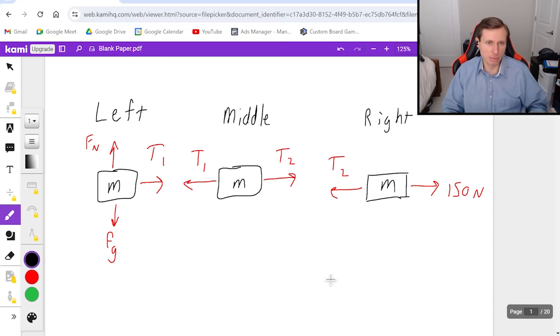What's step two? The sum of forces equations, Newton's second law. Now we got a bunch of different options we can choose from here. Obviously, we're dealing in the x direction, like I said earlier. But we're either looking at the left, the middle, or the right, or the system, which is all three combined.